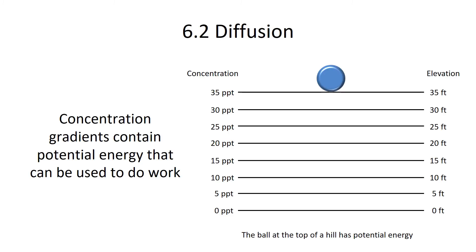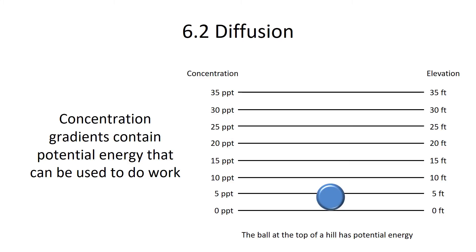Concentration gradients are very important because they store potential energy, and cells create and maintain concentration gradients to do work. For example, a ball at the top of a hill has potential energy — you let it go and it rolls down on its own without being kicked. Concentration gradients are similar: things will diffuse on their own as long as they are out of equilibrium. Don't forget, there's potential energy stored in these concentration gradients that cells can use to do work.